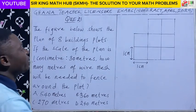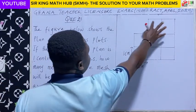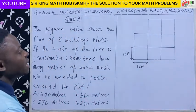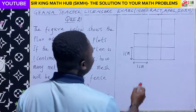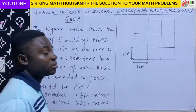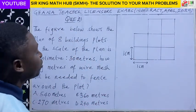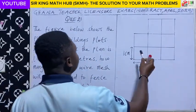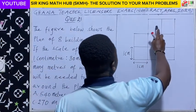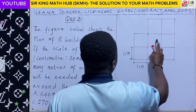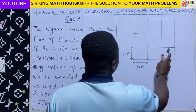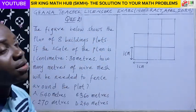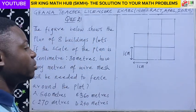A figure has been drawn here and this figure shows the plan of 8 building plots. As you can see, we have plots 1, 2, 3, 4, 5, 6, 7, 8 — so there is a plan of 8 building plots.